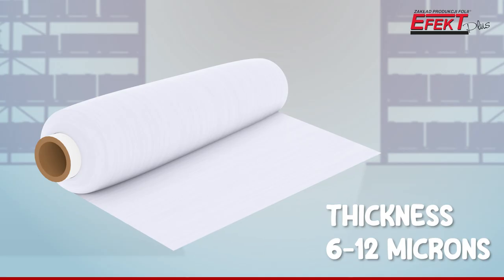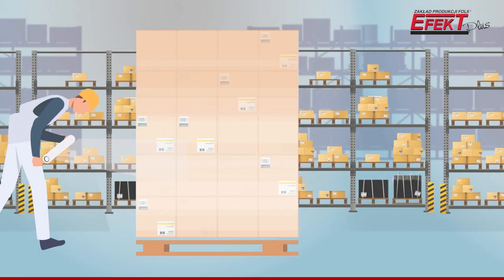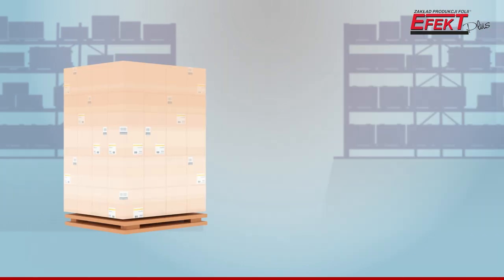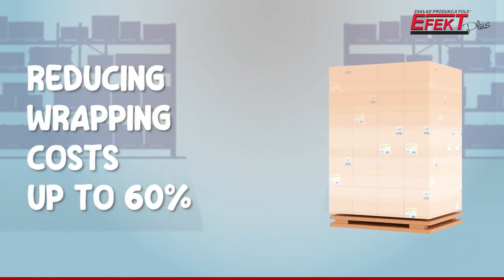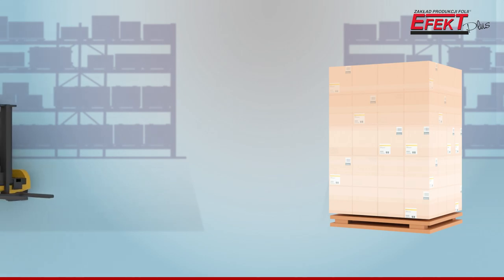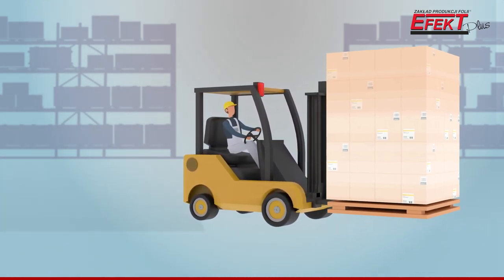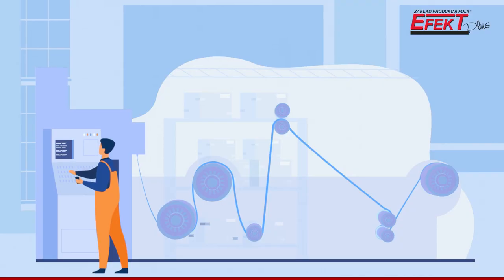By choosing pre-stretch film, you will reduce your cargo wrapping costs by up to 60%. Pre-stretch film is more than twice as efficient as classic stretch film. Winding length is up to 800 meters. It is the only pre-stretch film on the market produced directly on the production line.